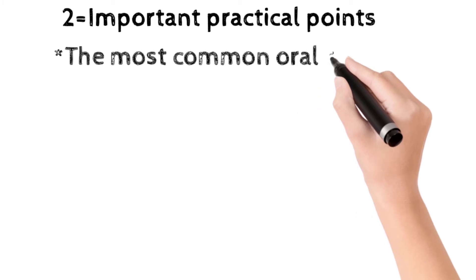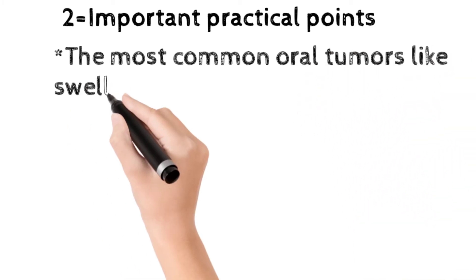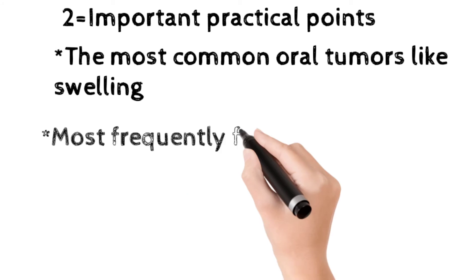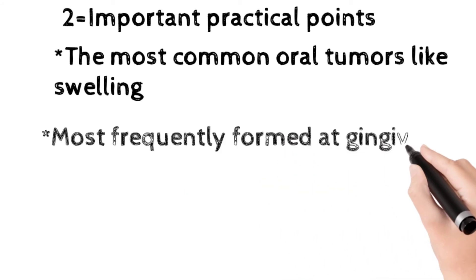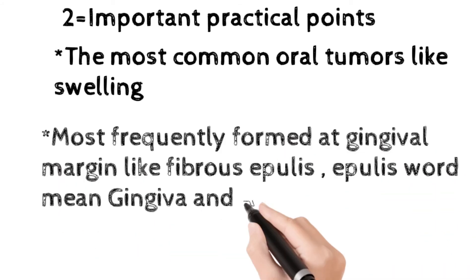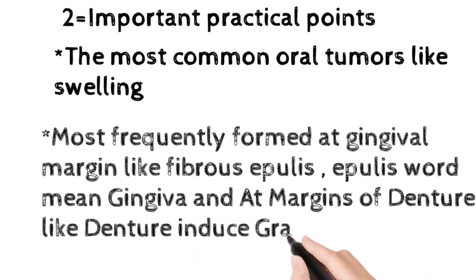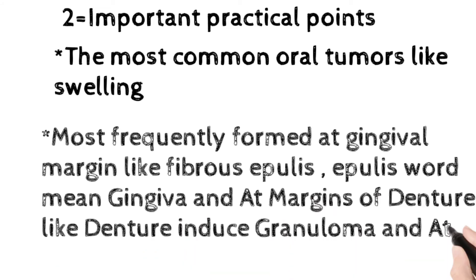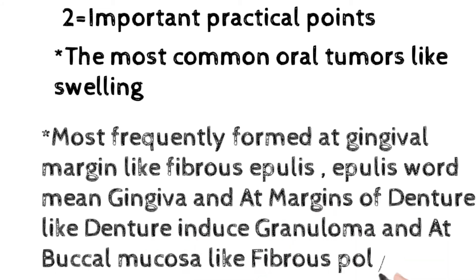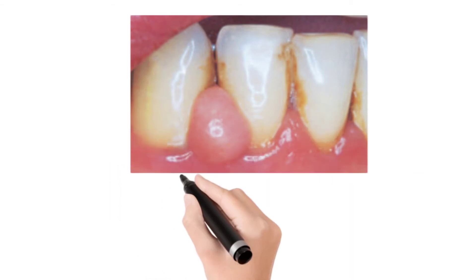Now come to the important practical points. The first point is that the most common oral tumor-like swelling is a fibrous nodule — specifically fibroepulis. The second point is it is most frequently formed at the gingival margin, like fibroepulis; at the margin of the denture, like denture-induced granuloma; and on oral mucosa, like fibrous polyp.